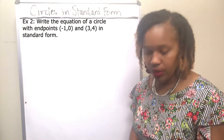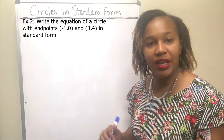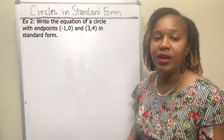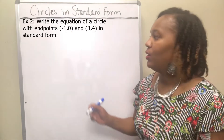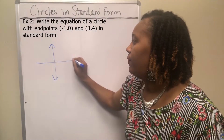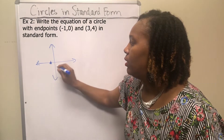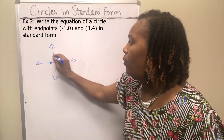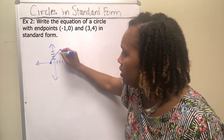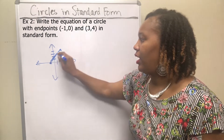For example 2, we want to write the standard form of the equation of a circle that has endpoints of a diameter at (negative 1, 0) and (3, 4). Plotting those points, we can see that the segment connecting them is the diameter, so the center of the circle is at the midpoint of that diameter.